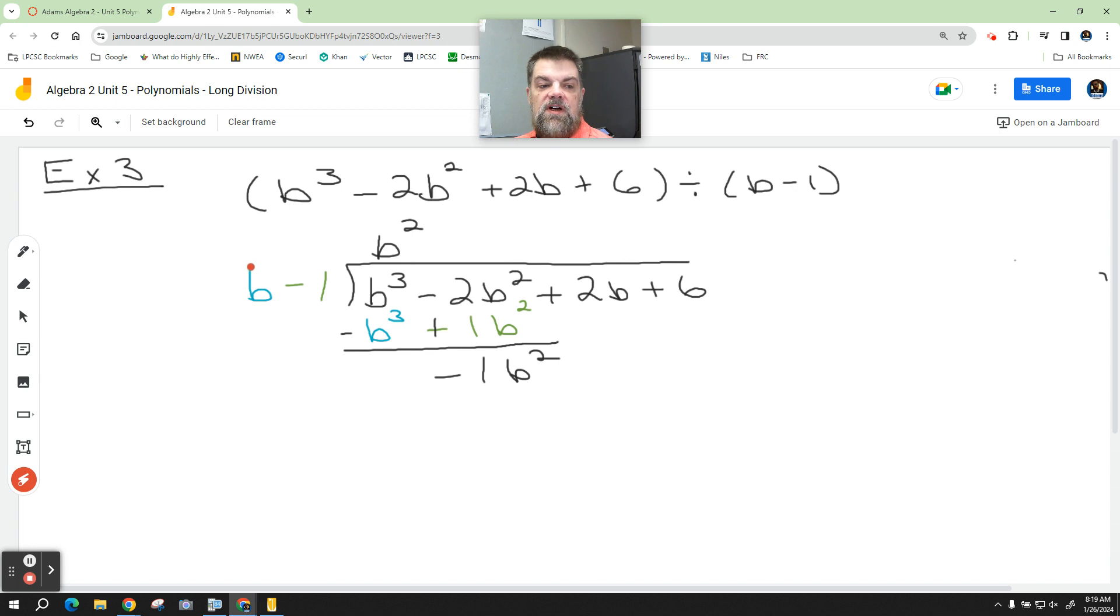Again, we're going to come over here and we're going to say, what do I multiply b by to get negative 1b squared? So we start with the number first. Technically, this is a 1 in front of the b, isn't it? So what do I multiply 1 by to get negative 1? Negative 1. So this is a negative 1. But now let's deal with the letter b needs to be multiplied by something to give me b squared. So what do I multiply b by to get b squared? B. Very good. So negative 1b.